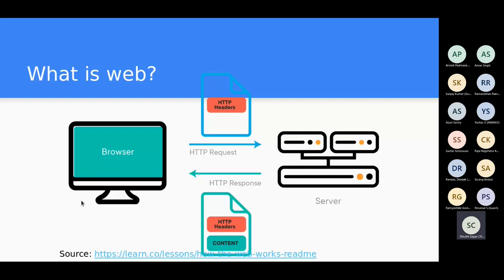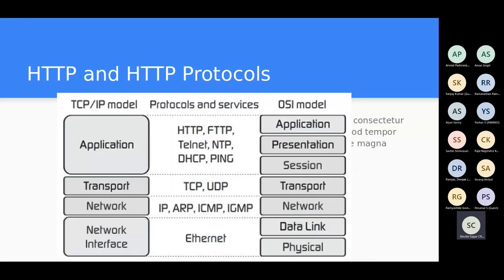Why would we need this and how is it possible? We have something called HTTP protocol, which is a distributed hypermedia information system that allows users to communicate on the worldwide web. The application we are building is on this HTTP protocol, which sits on the application layer of the TCP/IP model or the OSI model. Today's talk is mainly concerned with the application layer, though it can go up to the session layer if we want to do things in a secure way using sessions.